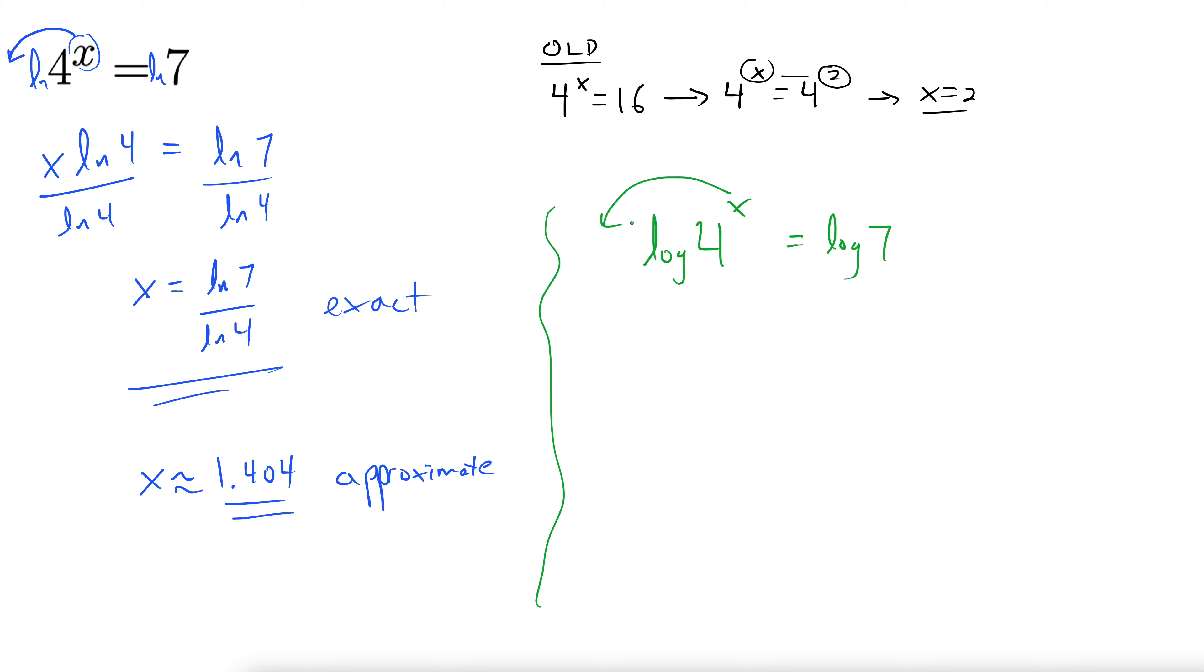It doesn't matter if you take log or natural log. Dividing both sides by log 4 gives us x equals log 7 over log 4.